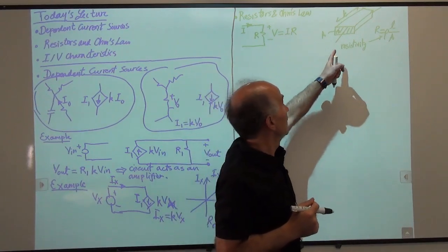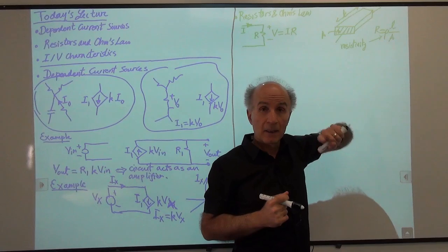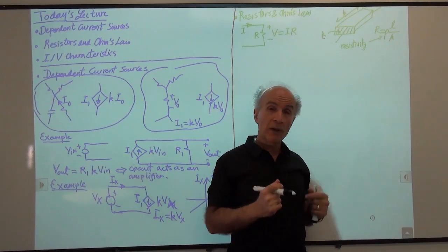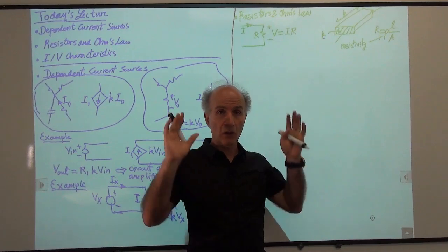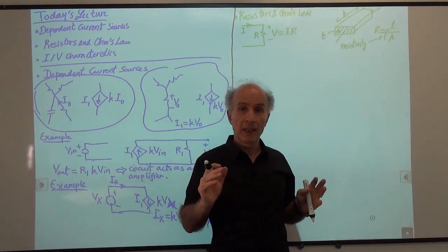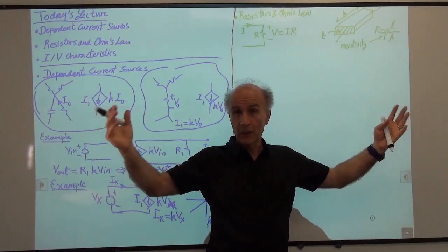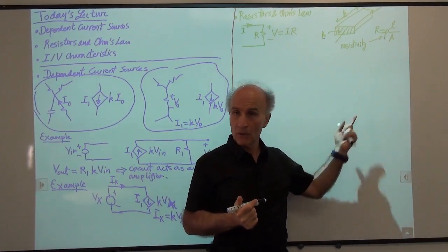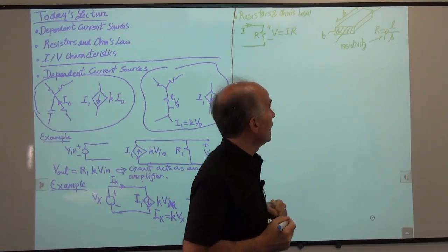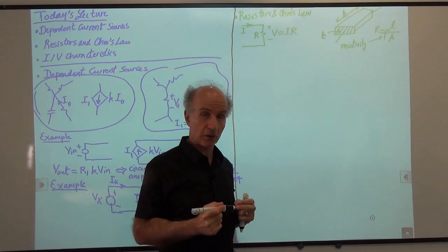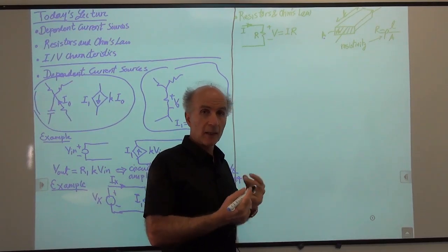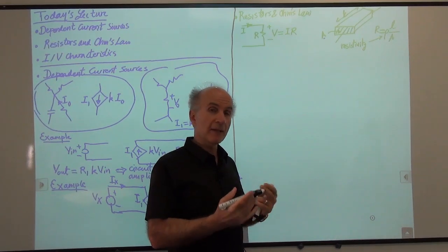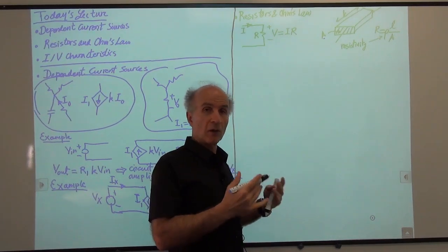This formula says the longer the structure, the larger the resistance. It also says the larger the cross-section area, the lower the resistance. That makes sense: imagine a hallway where people are trying to pass through. If we enlarge the hallway by a factor of two, people can pass more easily, so the resistance is reduced. Same idea here. Now that we have this conceptual picture for a resistor in mind, we can derive some simple relations based on Ohm's law and maybe KVL and KCL.